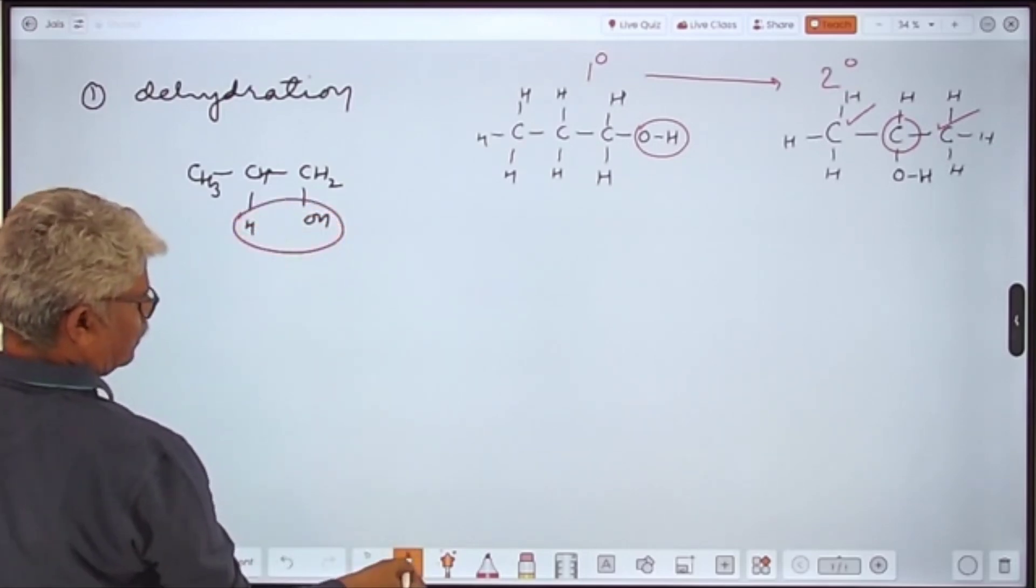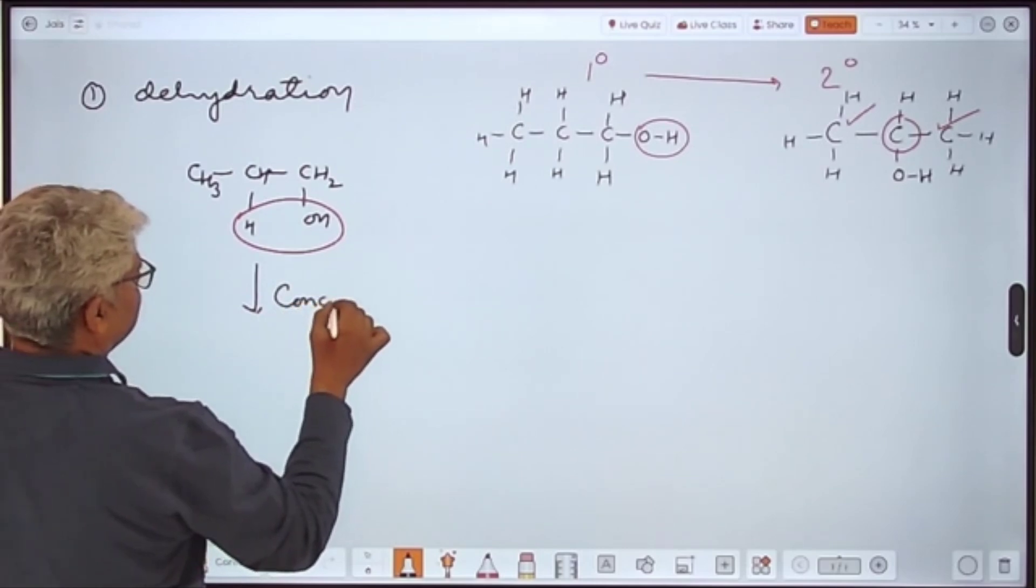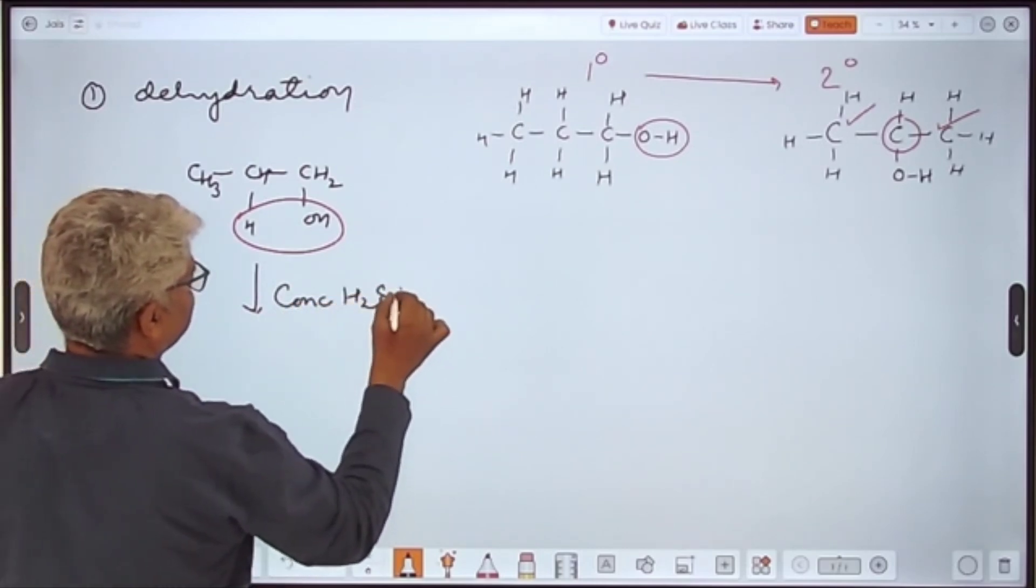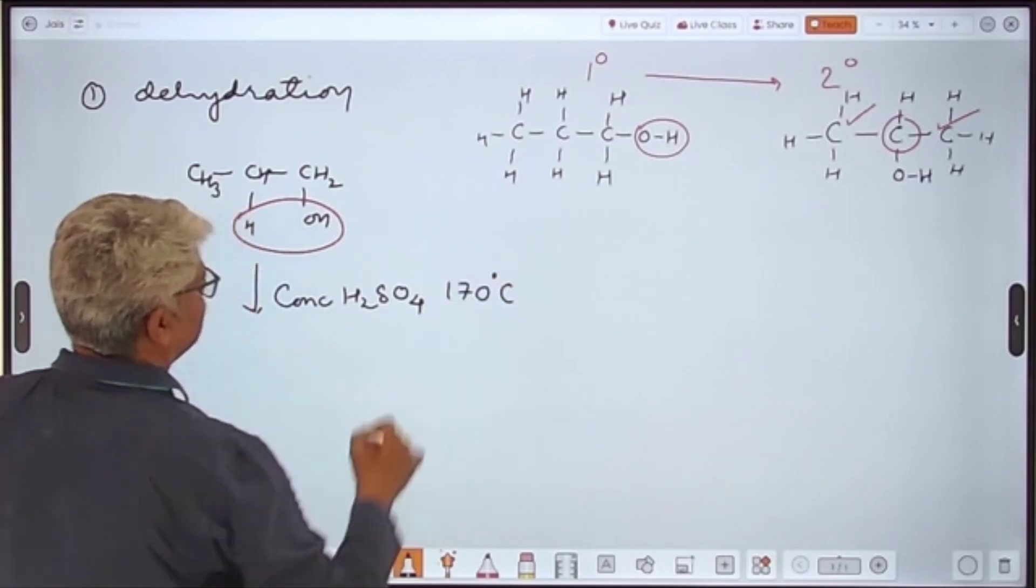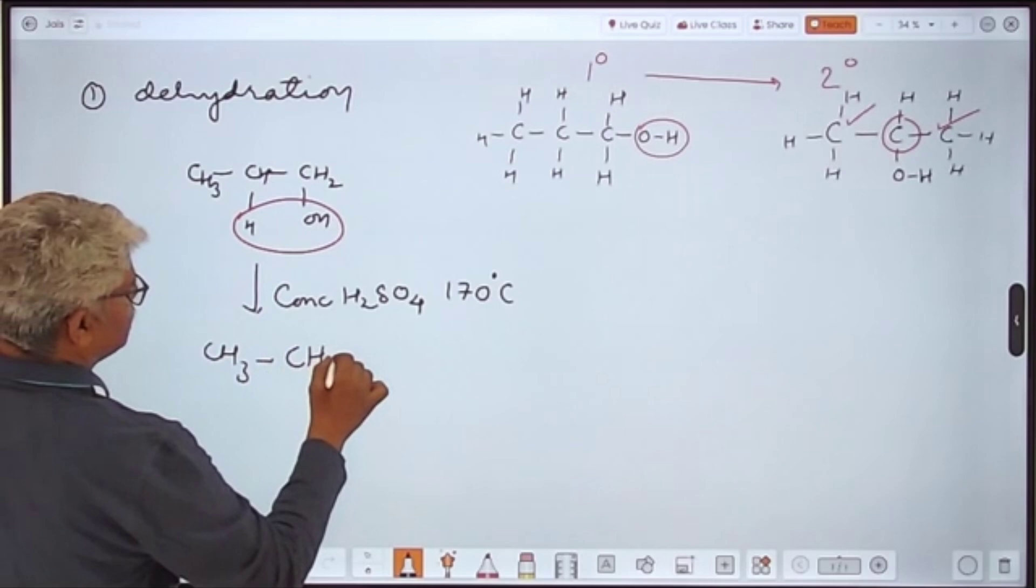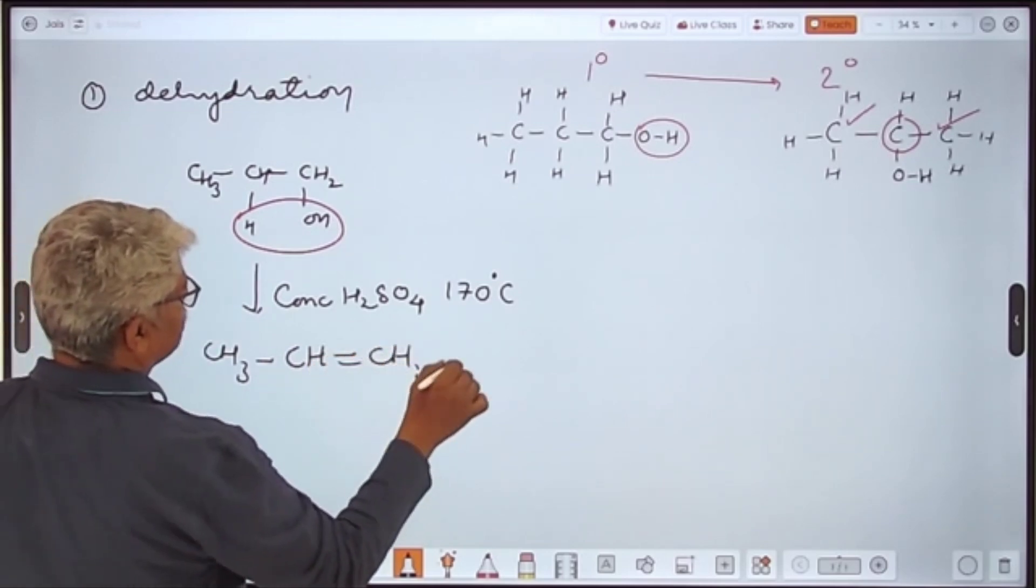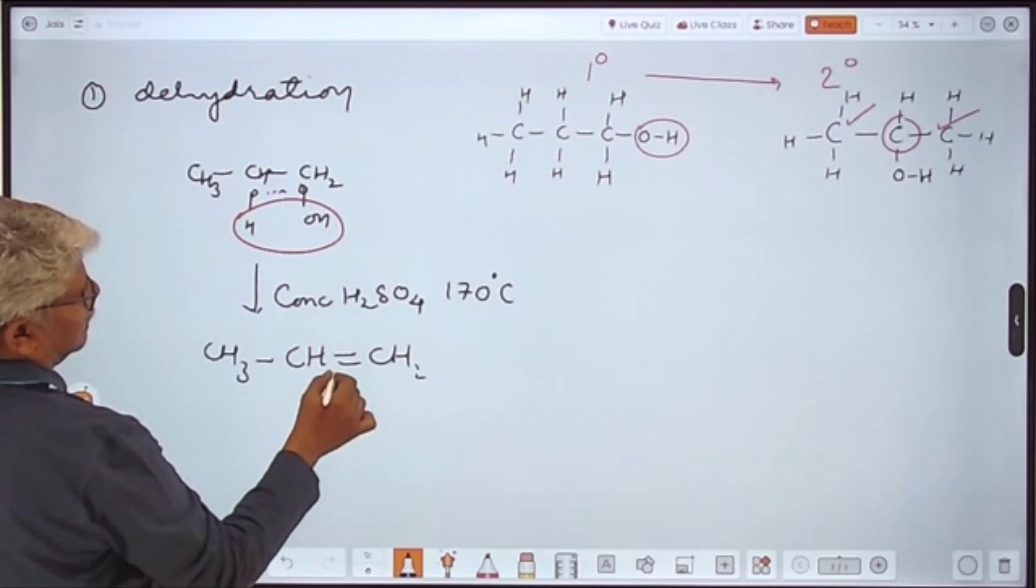How? By a dehydrating agent which is concentrated sulfuric acid at a temperature of 170 degrees centigrade. So this converts to CH3-CH double bond CH2. This valency and this valency convert to multiple bond. This is step number one.